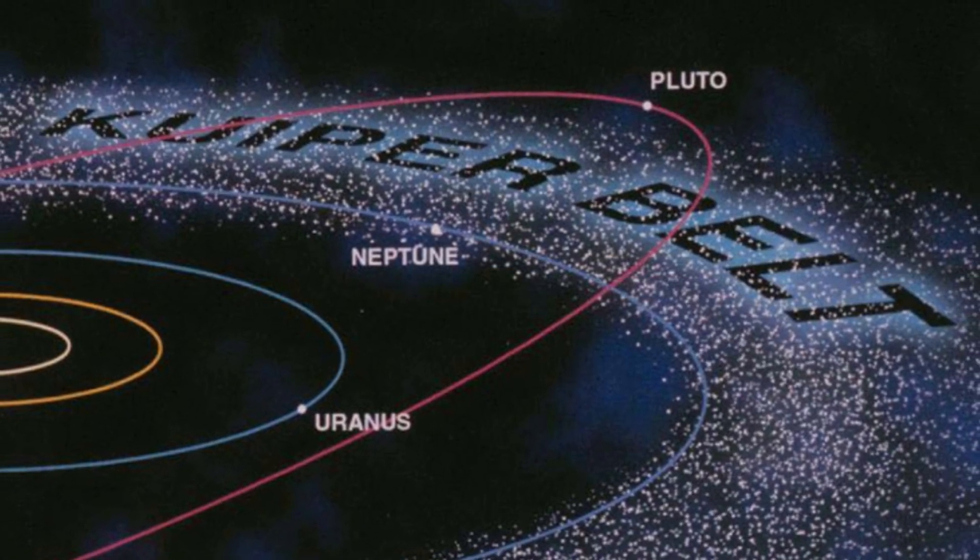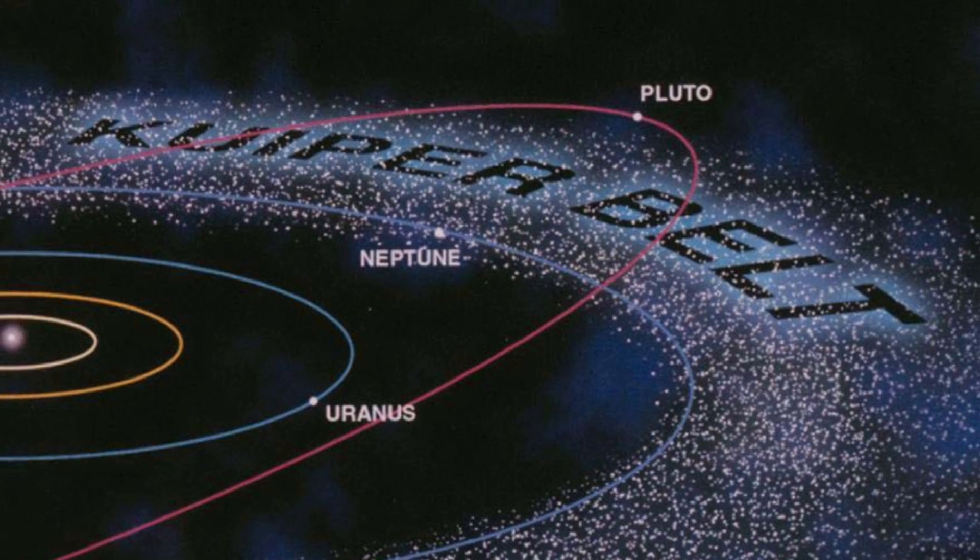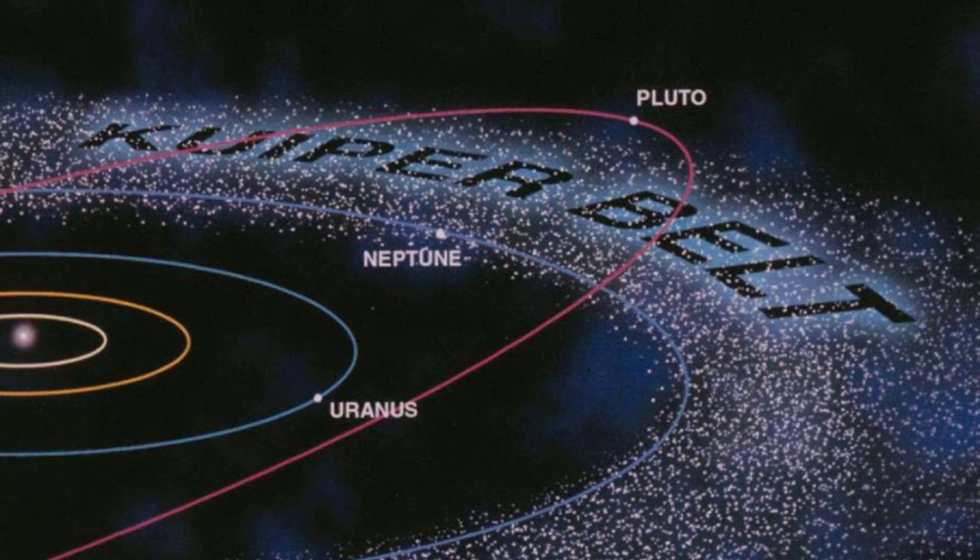The Kuiper belt is a vast region of space beyond Neptune that is home to a diverse array of icy objects, including dwarf planets, comets, and asteroids.